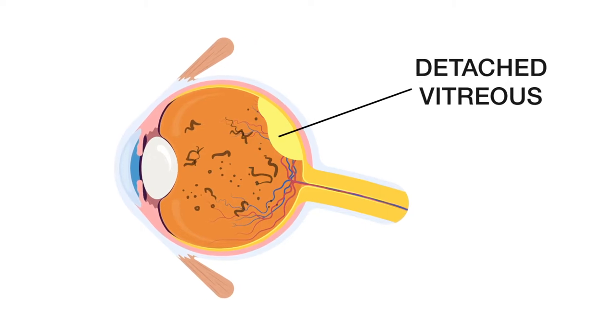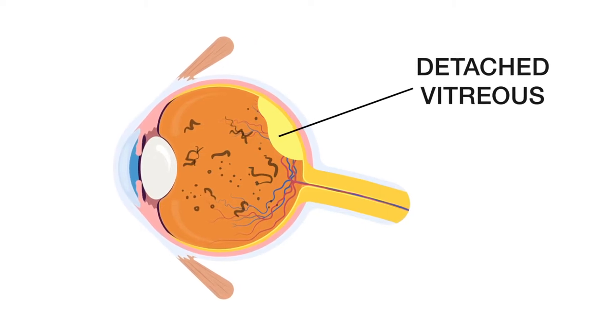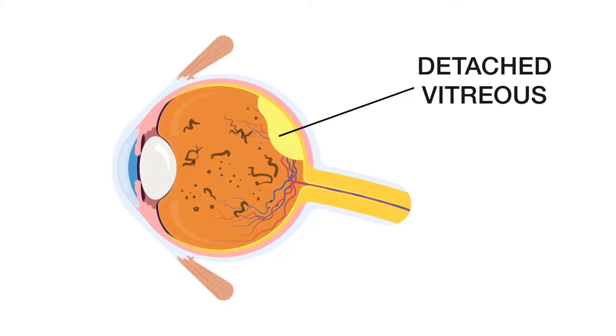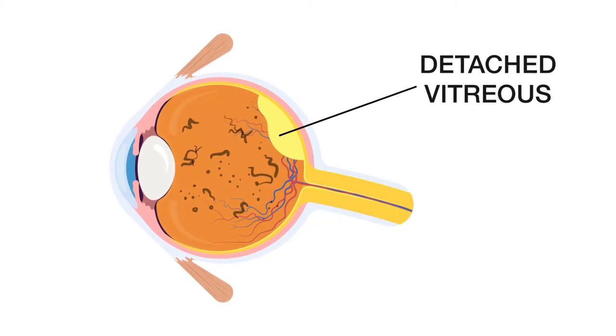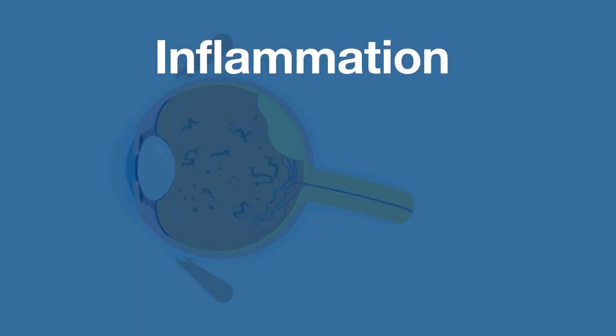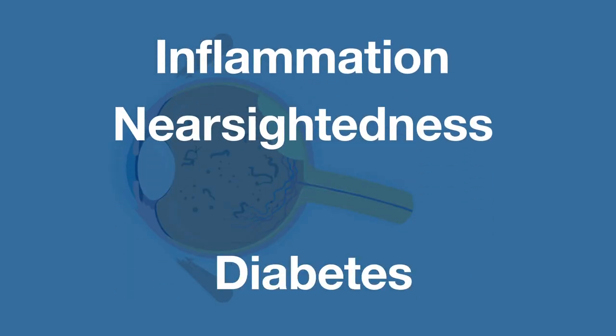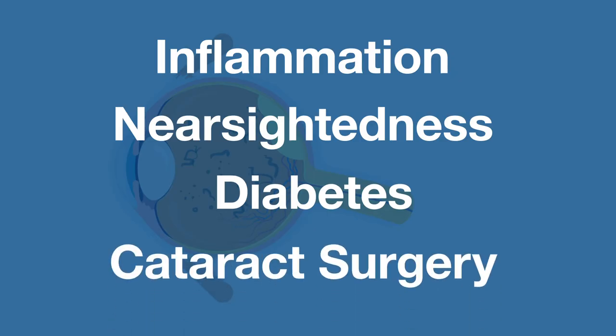A vitreous detachment, or posterior vitreous detachment, PVD, is when the jelly of the eye pulls away from the retina and occurs with symptomatic floaters. It can be associated with inflammation, nearsightedness, diabetes, or cataract surgery.